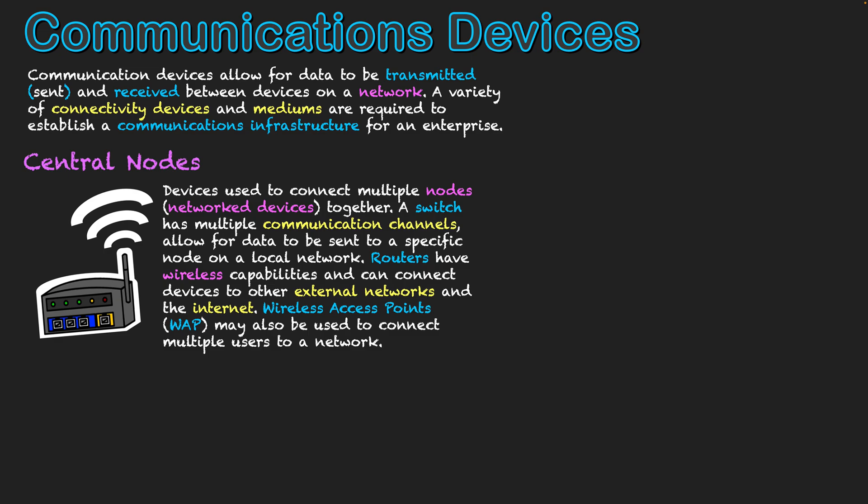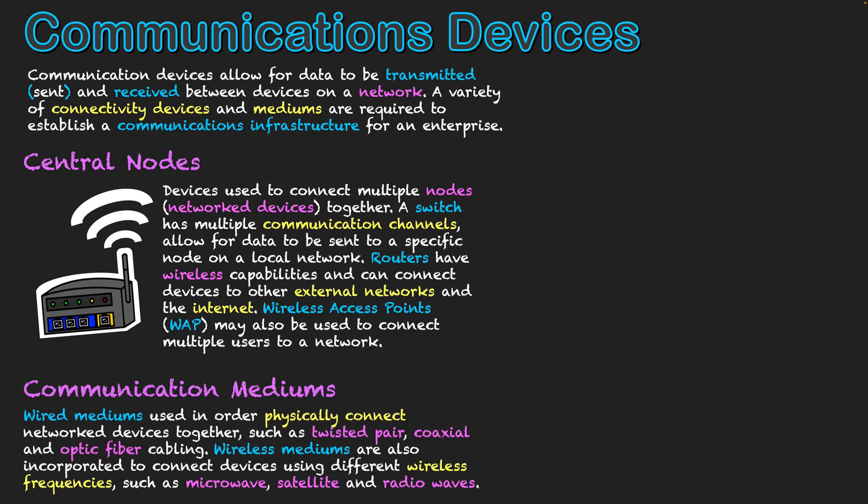The next area is what's actually connecting devices together — this is what we call communication mediums. We've got two classifications: wired mediums and wireless mediums. Wired mediums are used to physically connect network devices together. We're talking about cables such as twisted pair, which is what's inside that blue Ethernet cabling.